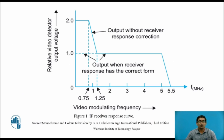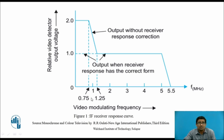Figure one shows the intermediate frequency (IF) receiver response curve. This figure plots relative video detector output voltage versus frequency in megahertz. The vestigial sideband is at 2 volts up to 0.75 MHz. Beyond 0.75 MHz, this vestigial sideband linearly reduces to 1 volt up to 1.25 MHz. After 1.25 MHz it is constantly at 1 volt up to 5 MHz. So from 2 to 1 volt, the reduction is linear between 0.75 MHz and 1.25 MHz.